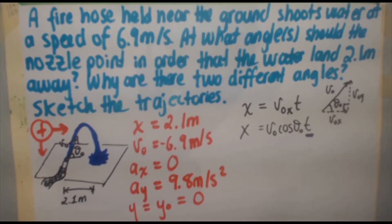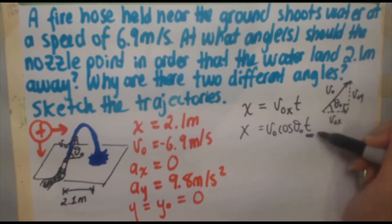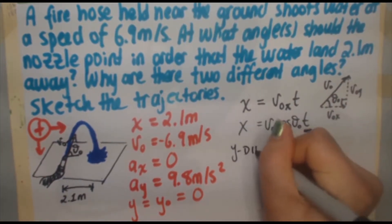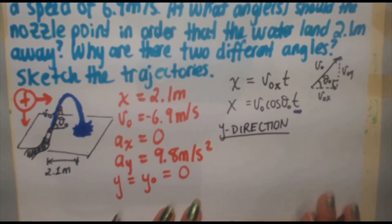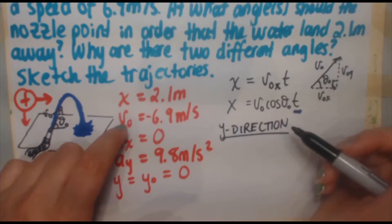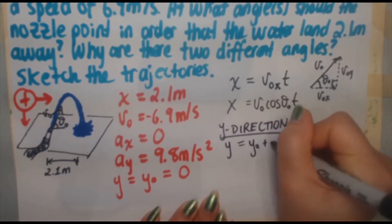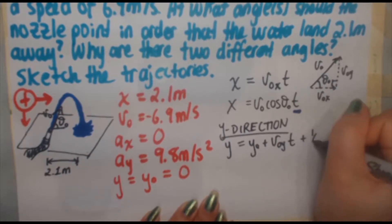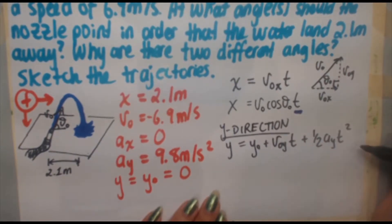The only thing in common to both directions, other than the angle, is the time. So in order to get the time, we need to start solving in the y-direction. Because there is acceleration in the y-direction, there's going to be a lot more math. We'll use the kinematics formula: y equals y-naught plus v-naught-y times t plus one-half a-y times t-squared — the standard kinematics equation personalized for the y-direction.